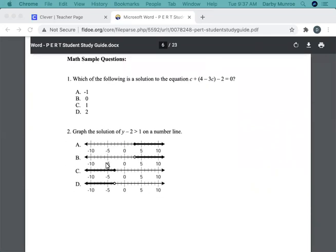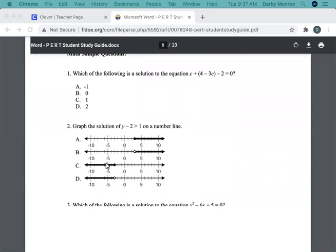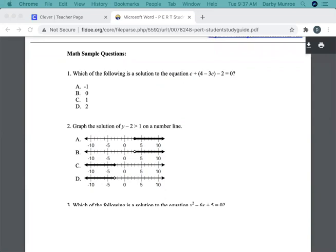So for this, there are 10 sample questions. The first one says, which of the following is the solution to the equation C plus 4 minus 3C minus 2 equals 0. So we want to isolate the C's and get them by themselves. And we also need to combine like terms. So I could say C plus 4 minus 3C minus 2 equals 0. If I were to combine like terms, then C minus 3C, that's like 1 minus 3 is minus 2. So minus 2C, and then plus 4 minus 2. So 4 minus 2 is 2 equals 0.